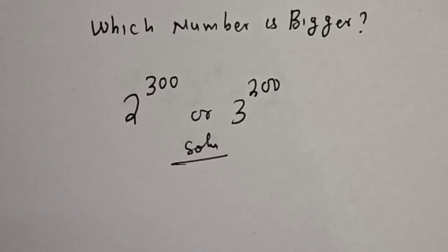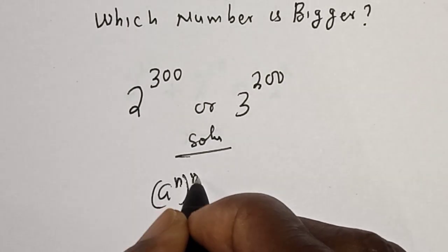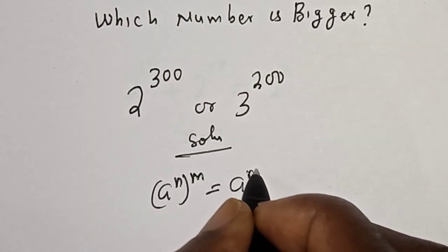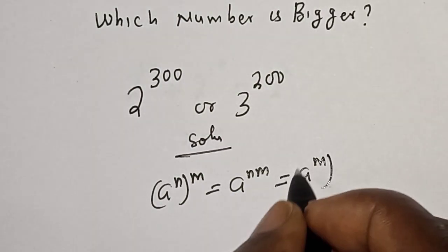Solution: Take note of this rule that a raised to power n to the power of m is equal to a raised to power nm, which is equal to a raised to power m to the power of n.